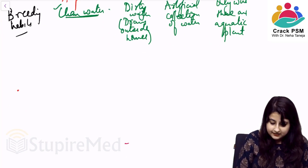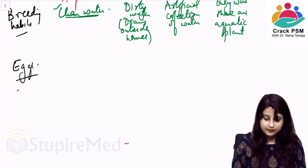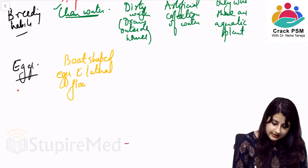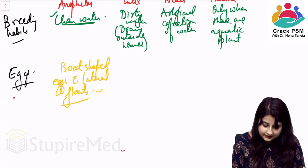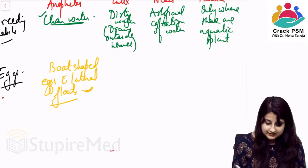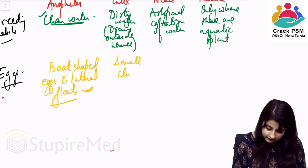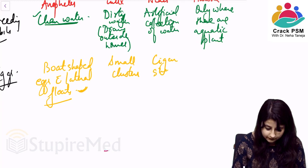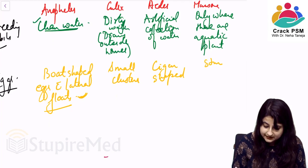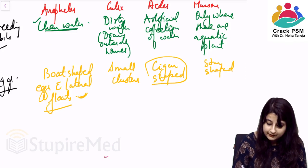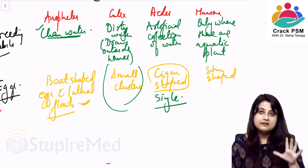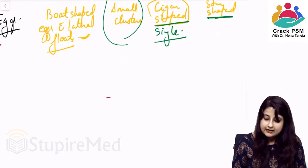All of these mosquitoes lay eggs. The shape of Anopheles eggs is a straight MCQ question — they are boat-shaped eggs with lateral floats. Culex eggs are laid in small clusters. Aedes eggs are cigar-shaped and are laid as single eggs. Mansonia eggs are star-shaped. Remember: Anopheles — boat-shaped; Culex — clusters; Aedes — single, cigar-shaped; Mansonia — star-shaped.